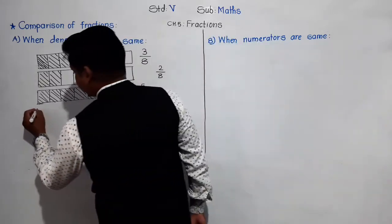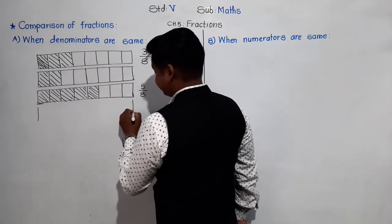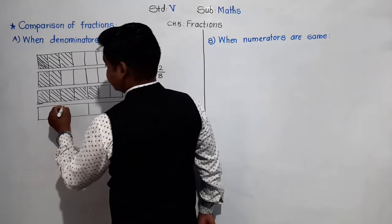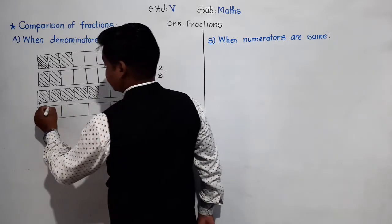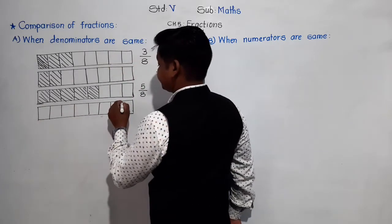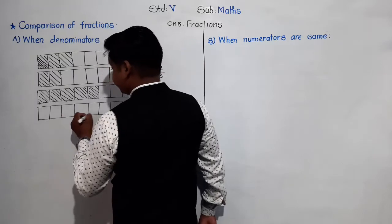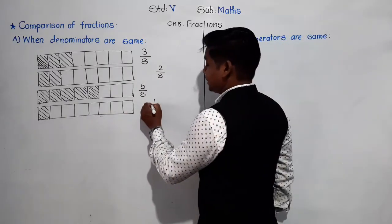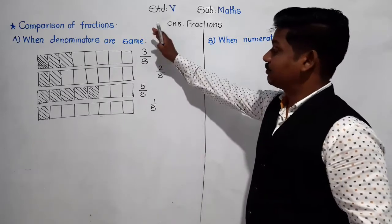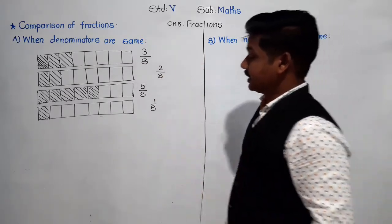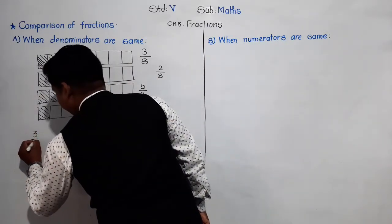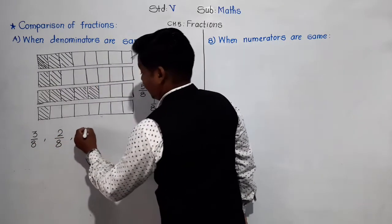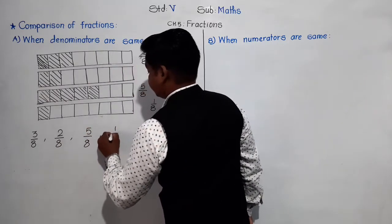Let's take one more chocolate — so many chocolates! Again divided into eight equal parts, and this time only one part is shaded. So the fraction is 1/8. Now we have four fractions: 3/8, 2/8, 5/8, and 1/8.